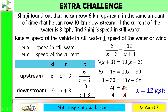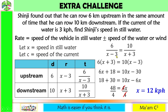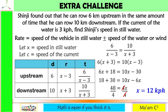Shinji's speed in still water is 12 kilometers per hour. Let's check: 12 minus 3 is 9, and 6 divided by 9 in lowest terms is 2 thirds. Then 12 plus 3 is 15, and 10 divided by 15 in lowest terms is also 2 thirds. So this is correct.